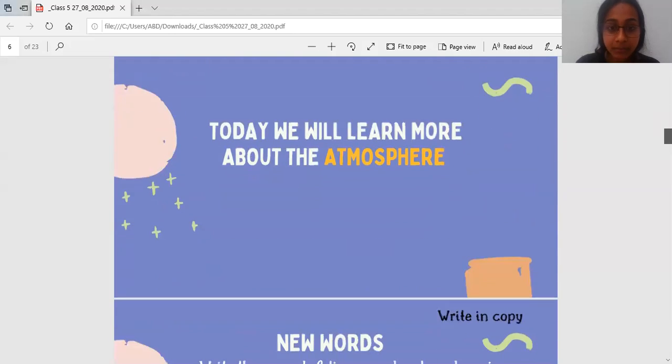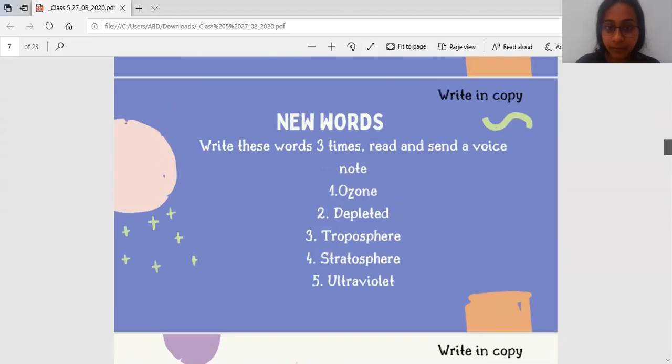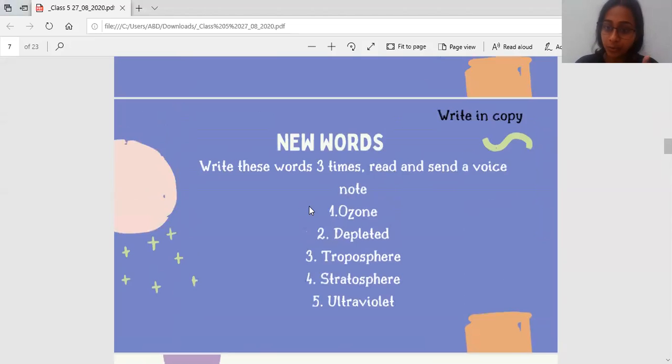Here are some new words that you have to write down. The new words are ozone, depleted, troposphere, stratosphere, and ultraviolet. You can pause the video here, go back, listen to it again and then read it. You will write these new words three times and then you will send me a voice note.